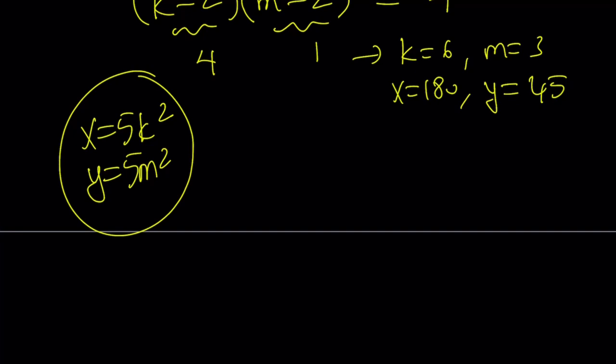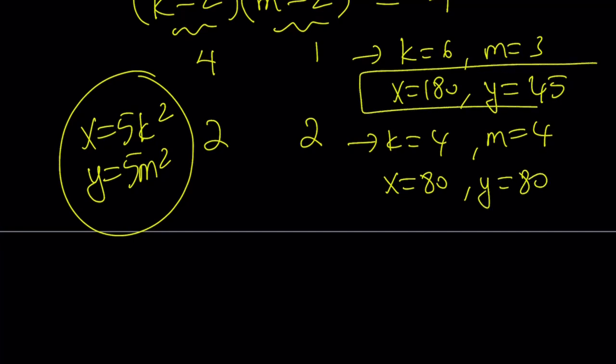Let's take a look at another scenario. How about 2, 2 for k minus 2 and m minus 2? From here, we get k equals 4, m equals 4. It just means that x equals 5 times 16 and y equals the same. So x is going to become 80 and y is going to be the same.